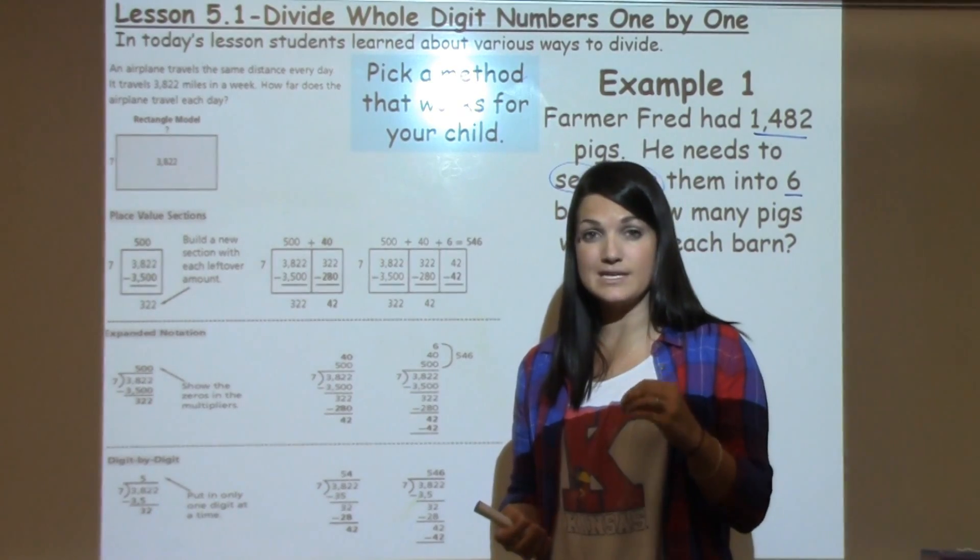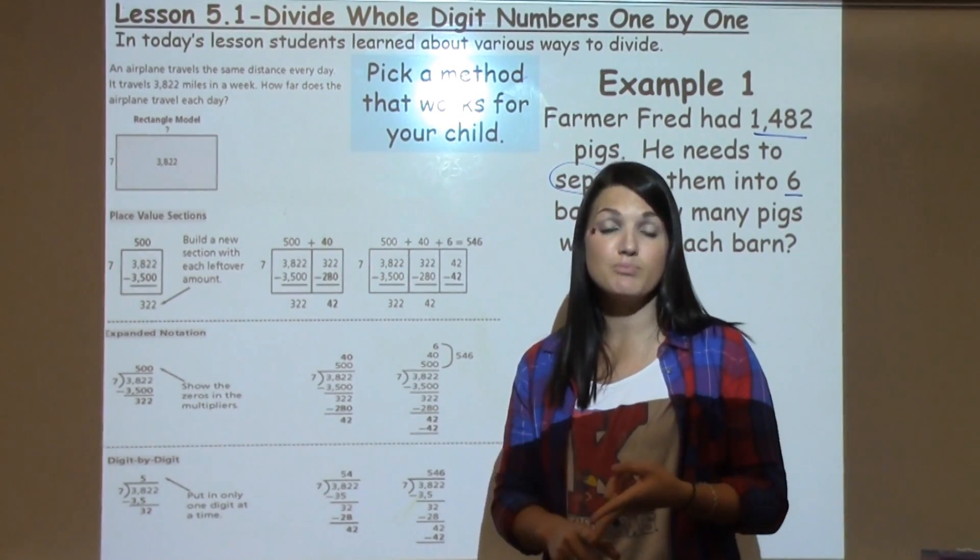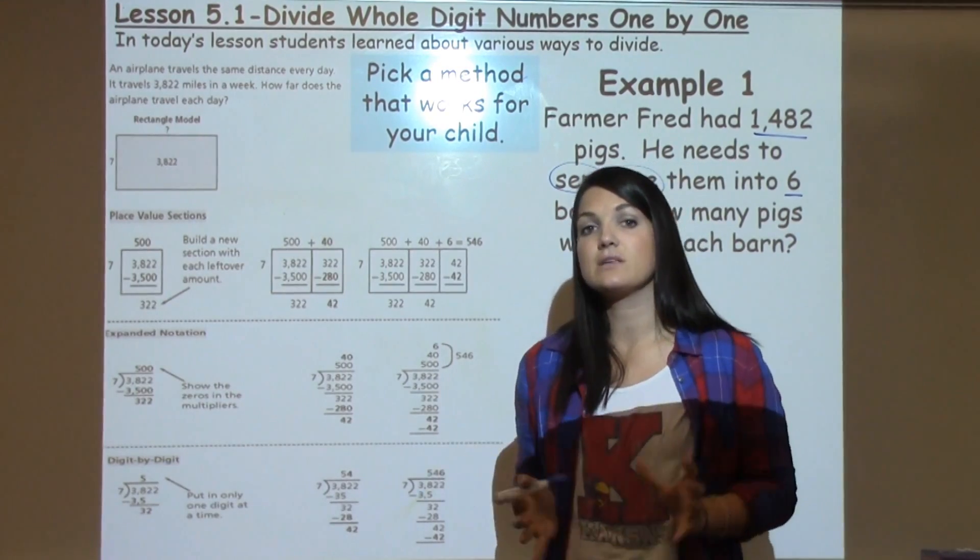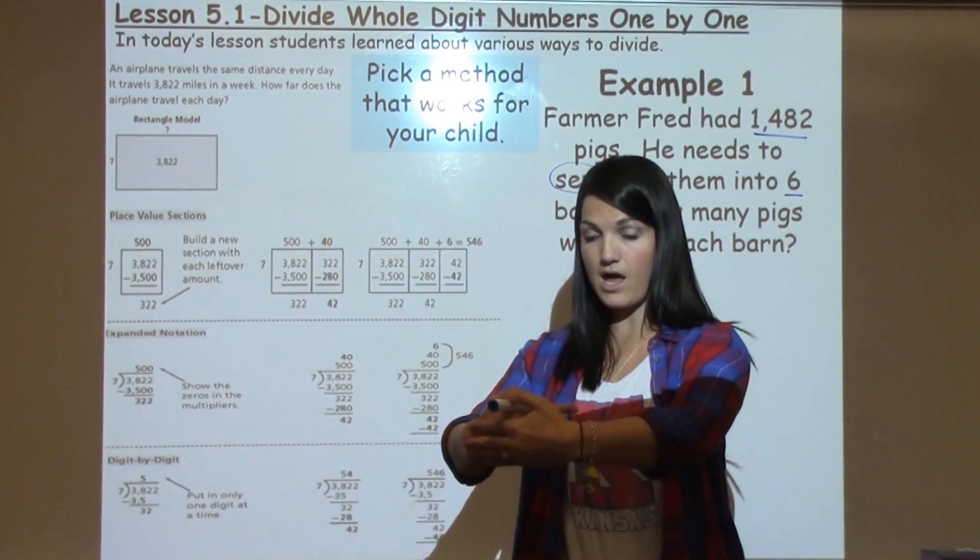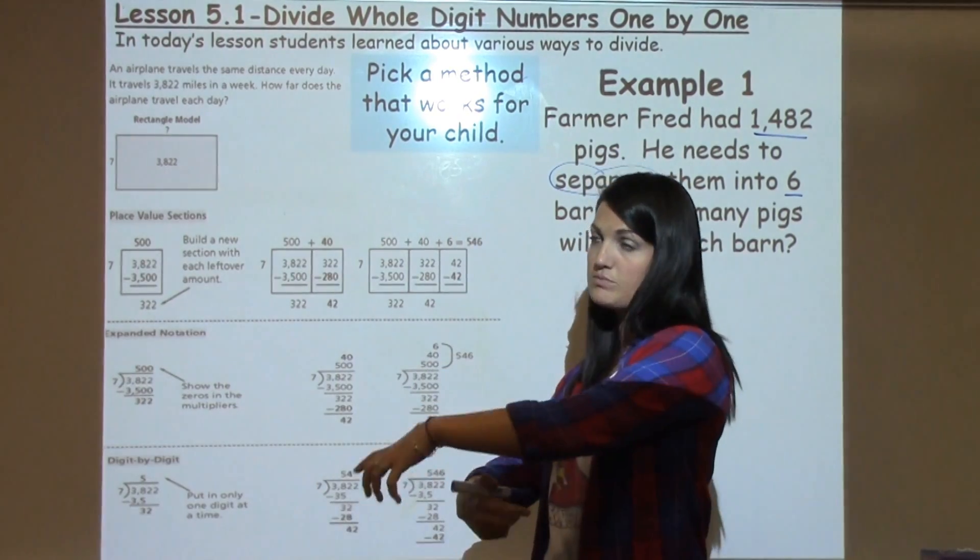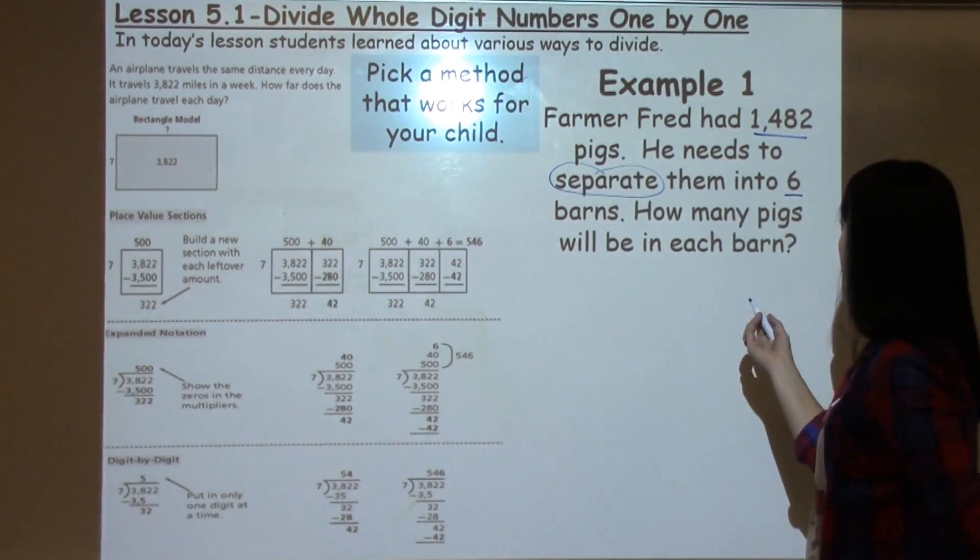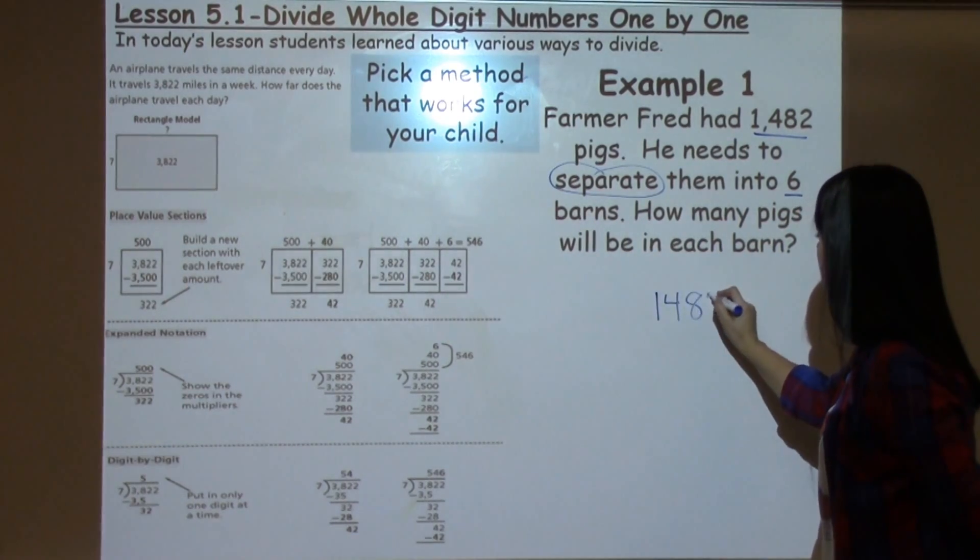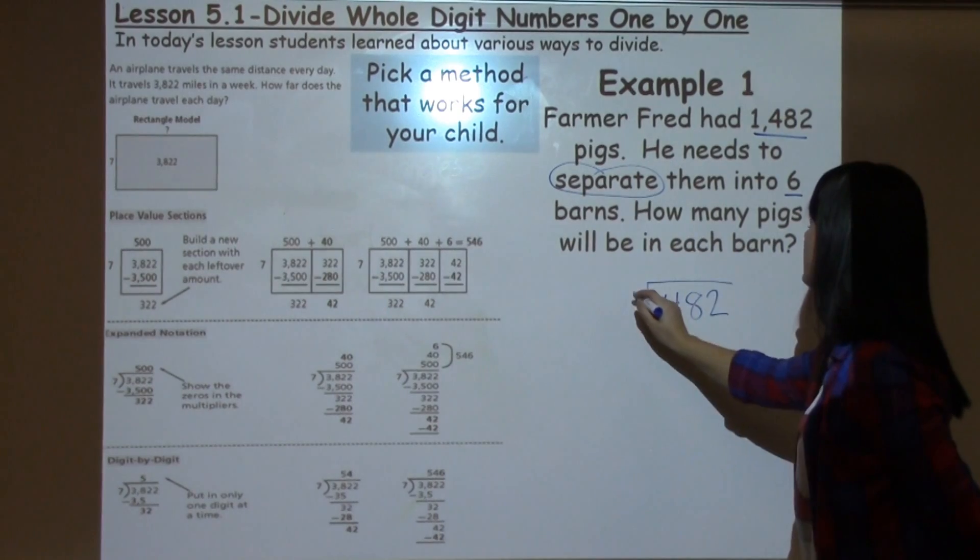With division, we really focus in on words like separate, split, share equally, groups. So think about taking your big amount, how much you have, and making it into smaller equal groups. So this definitely is a division problem and we're going to take 1,482 divided by 6.